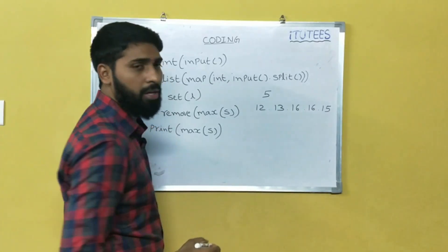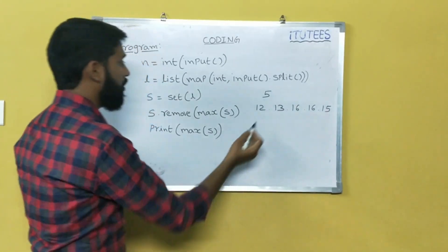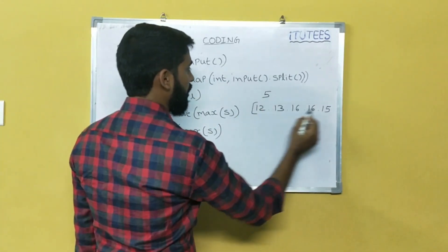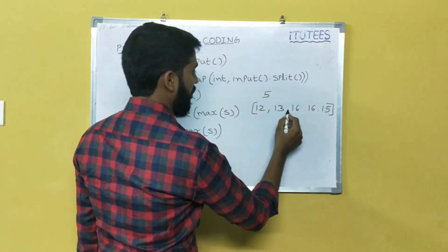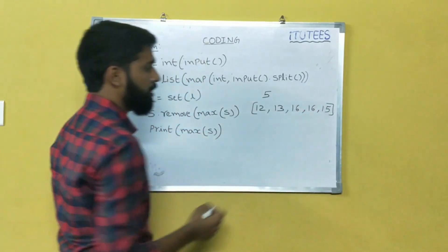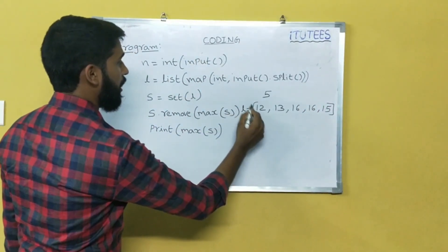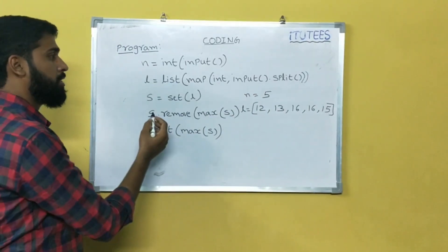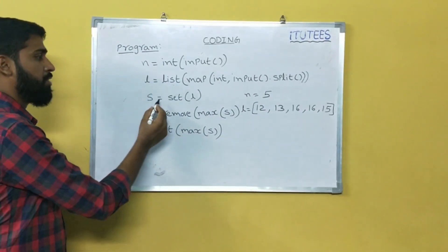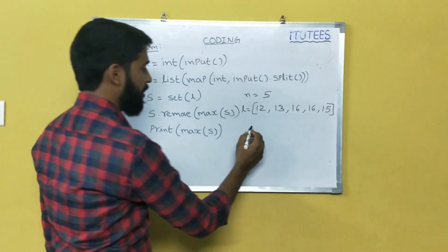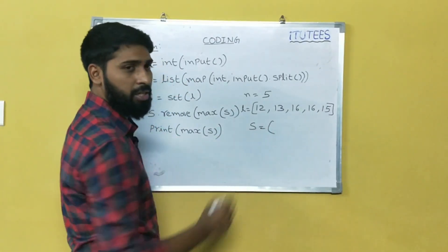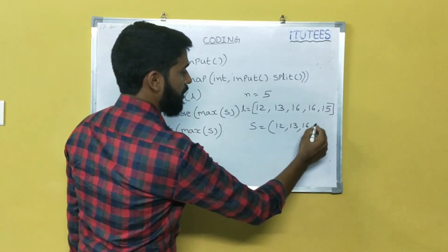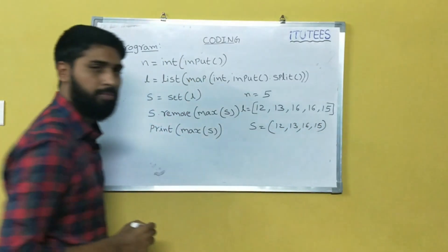That means 12, 13, 16, 16, 15 are integers. Now you can convert it into the list. So this is the list — after executing the second instruction it looks like this. It is L equals to 5 elements. Next instruction: S equals to set of L. That means the duplications are eliminated — 12, 13, 16, 15.